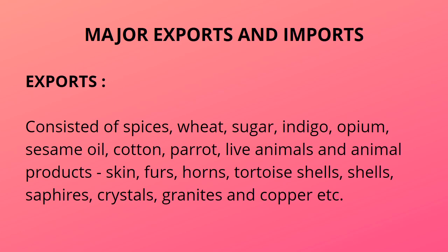Here the names of major exported and imported items are written. Exports consisted of spices, wheat, sugar, indigo, opium, sesame oil, cotton, parrots, live animals and animal products, skin, furs, horns, tortoise shells, simple shells, sapphires, crystals, granites and copper. These are the names of items for which export was done.